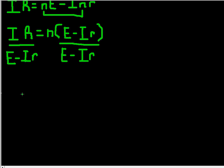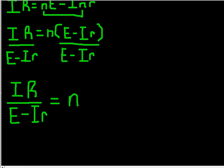And so, IR over E minus IR. The uppercase and lowercase do make a difference, because you could just switch out the variable and it would be something different. Equals n. And that's it.